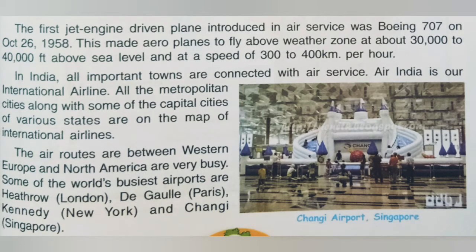The first jet engine driven plane introduced in air service was Boeing 707 on October 26, 1958. This made aeroplanes able to fly above the weather zone at about 30,000 to 40,000 feet above sea level and at a speed of 300 to 400 km per hour.